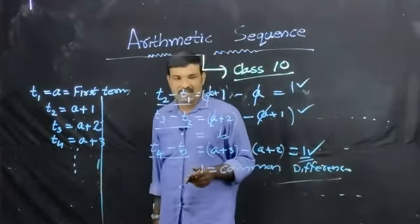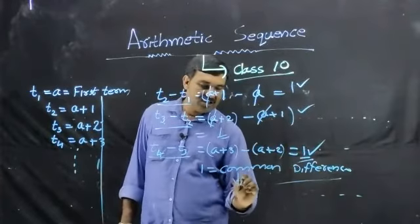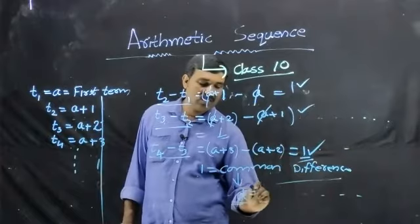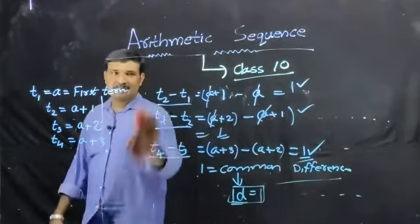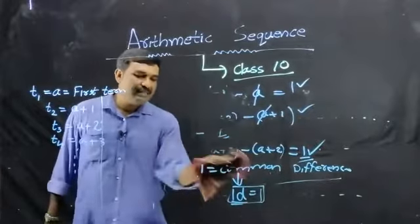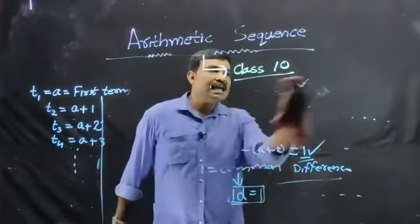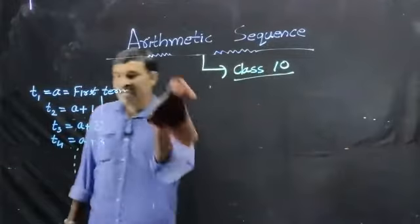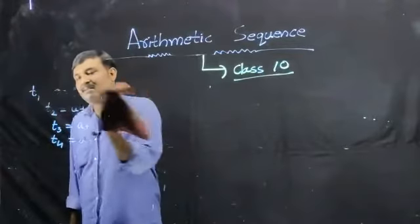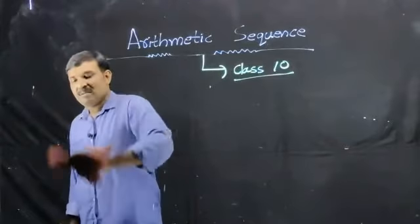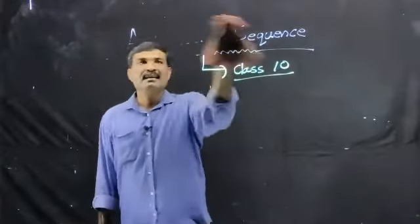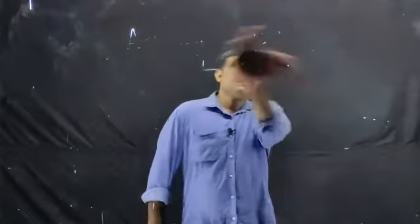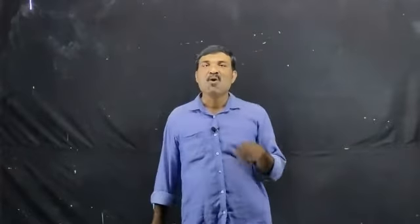This difference of one is called the common difference of an arithmetic sequence. This is always a constant. Common difference is usually denoted by the letter d. Here the common difference d is equal to one. So in an AP or arithmetic sequence, the difference of any two consecutive terms is always a constant. We subtract a higher term by the term just before it and it equals a constant — that is a property of an arithmetic sequence.